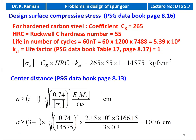Then the center distance — the equation is on page number 8.13. A is greater than or equal to (i+1) into the cubic root of 0.74 divided by design compressive stress squared, into E into design torque divided by i into psi. Substituting: (3+1) × cubic root of 0.74 divided by 14575² × 2.15×10^6 × 3166.15 divided by 3 × 0.3, which is 10.76 centimeter.